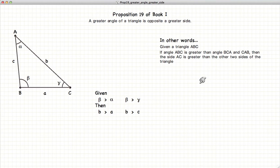This video presentation is going to be on Proposition 19 of Book 1, which states that if you have a triangle, the largest angle being beta, then the side opposite the largest angle, in this case B, will be larger than either of the other two sides of the triangle. And we're going to demonstrate this by contradiction.